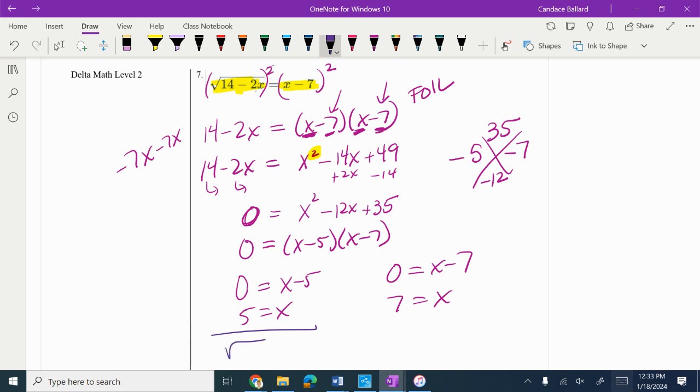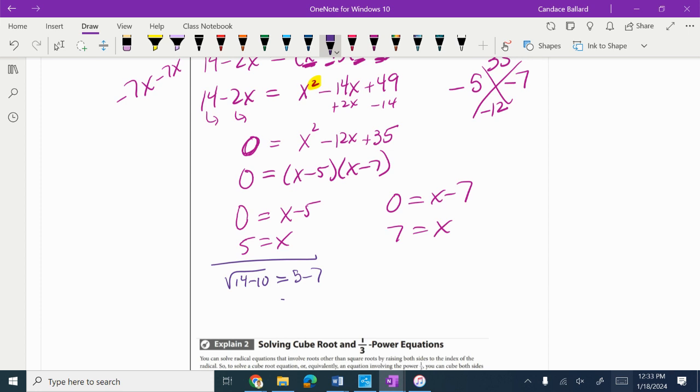So I'm putting 5 in. 2 times 5 is 10, so I have the square root of 14 minus 10. I'm checking to see if that equals 5 minus 7. Here's the problem: 5 minus 7 is negative 2. Square root of 4 is not negative 2, so that's an extraneous solution.